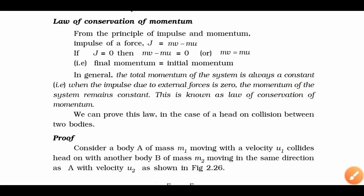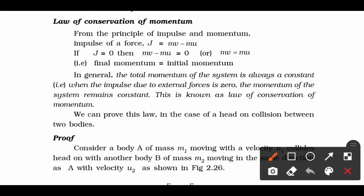Law of conservation of momentum — from the principle of impulse and momentum. Impulse force को हम change in momentum की terms में निकालते हैं, जो denote होता है j equals to mv minus mu से। अगर impulse की value zero हो जाए, तो उस case में change in momentum भी zero के equal होगा।